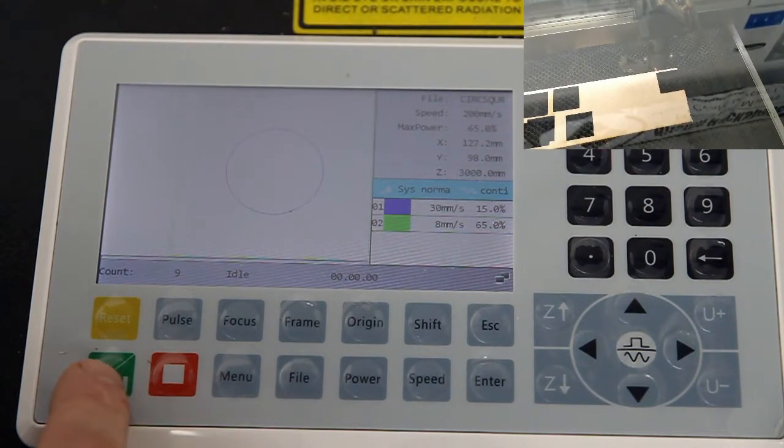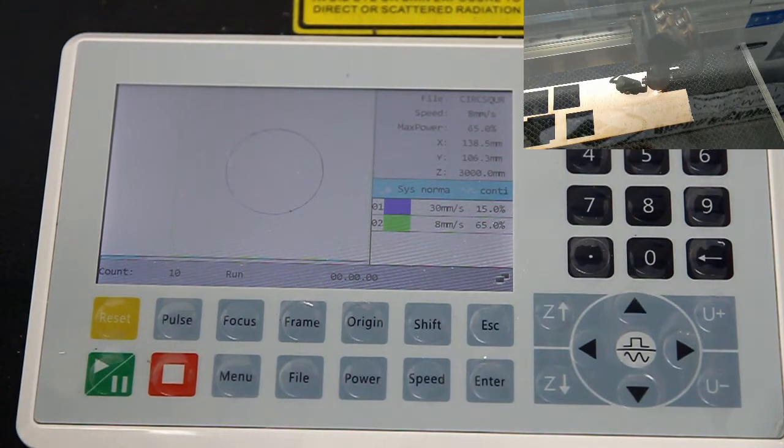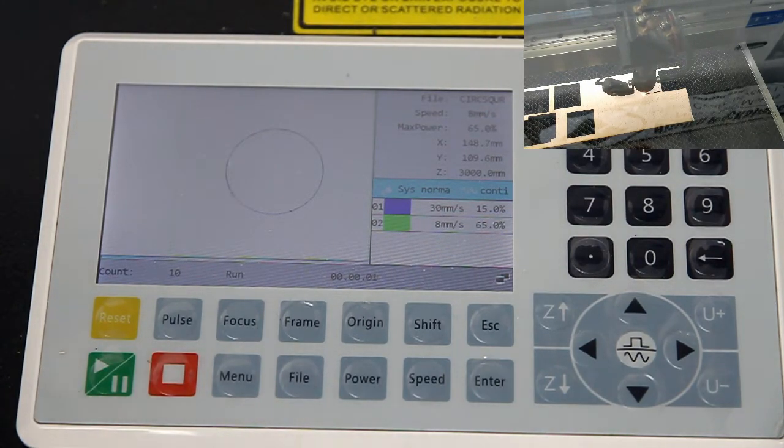With everything set up, you can press the green arrow key to start the job. Pressing it again will pause the job, or pressing the red square will stop the job.